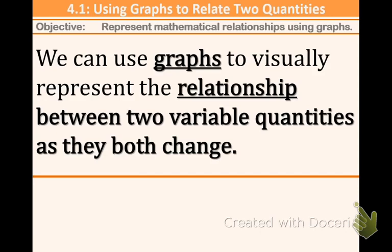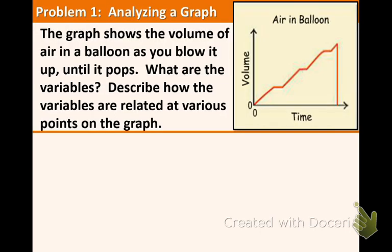Feel free to pause here to catch up. In example 1 we have this graph of air in a balloon. The graph shows the volume of air in a balloon as you blow it up until it pops. What are the variables? Describe how the variables are related at various points on the graph. Well first, the variables are the x and y axis labels. So the variables are volume and time.